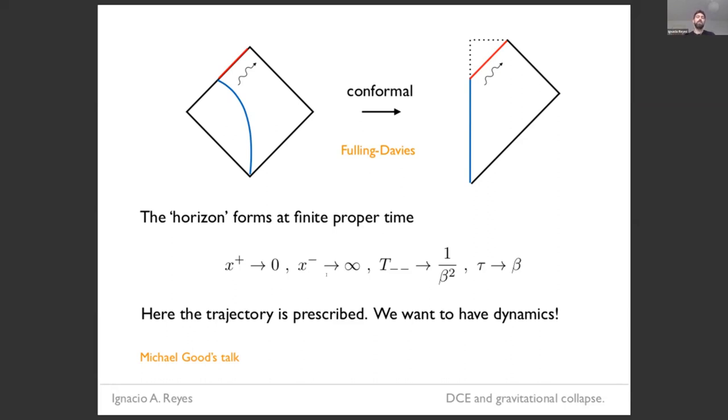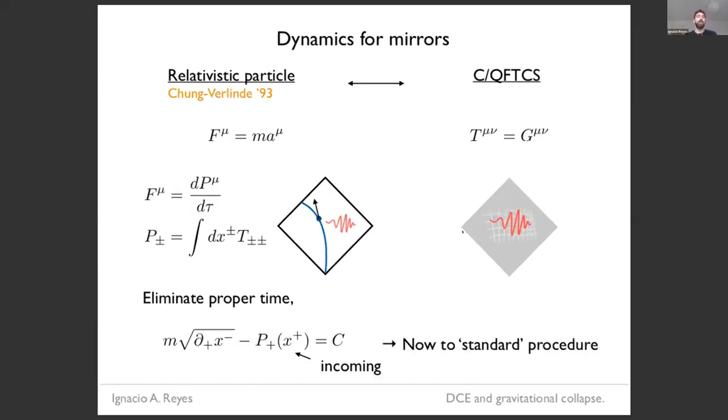Now the point here is that the trajectory is being prescribed, it's being given, it doesn't follow from some dynamical principle. So what we want to do is to understand this problem, but we want to give dynamics to the mirror. Now we'll also hear more about moving mirrors today a bit later. So what's the simplest dynamics that we could give? This was worked out in a beautiful paper by Chung and Verlinde. The simplest answer is just to give mass to this particle and assume that it satisfies the second law.